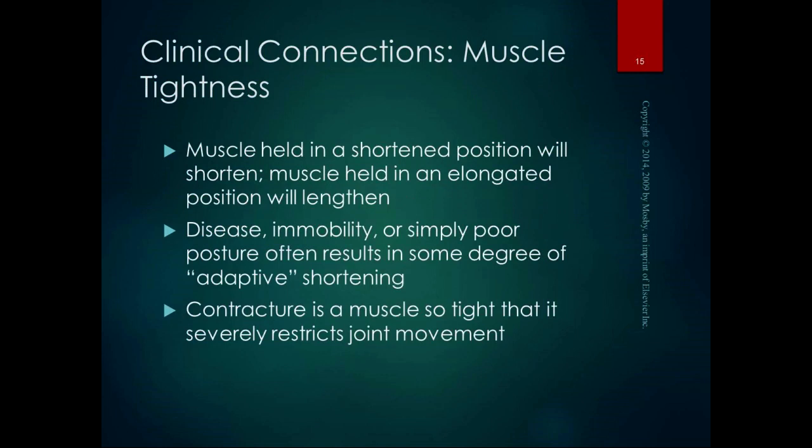We talk a lot about stretching in PT — we're always advising people to stretch and teaching people how to do it correctly. One of the things that happens with muscle immobility is that a muscle held in a shortened position over time will shorten, and a muscle held in an elongated position will lengthen. Disease, immobility, and poor posture often result in some degree of adaptive shortening. If you always sit with poor posture, eventually you would get adaptive shortening of those anterior muscles.